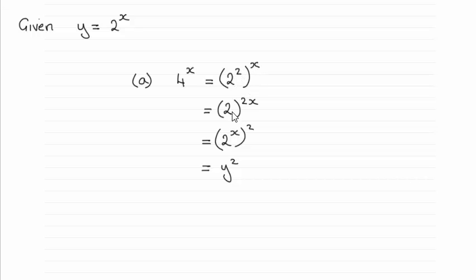That is, it's exactly the same as 2 to the power 2x. Then you can swap this around and say it's 2 to the power x all squared. We know that 2 to the power x is y, and so you end up with y squared.